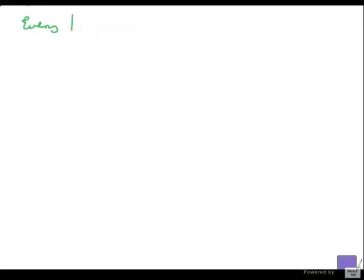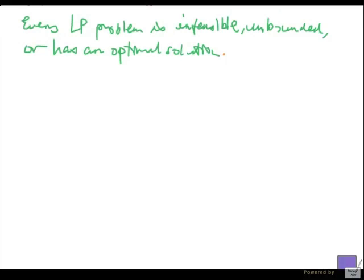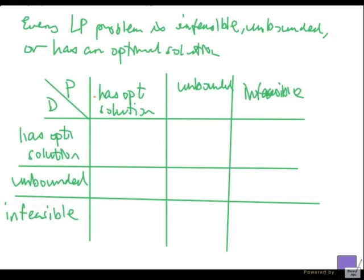So recall that every linear programming problem is infeasible, unbounded, or has an optimal solution. We are now going to look at the possibilities for the pair. The duality theorem says if P has an optimal solution, then dual has optimal solution. So that means the dual cannot be unbounded and infeasible. So this is possible, but these are impossible. Checkmark means possible. Of course, this checkmark here is not just possible, it is always true. But X is impossible.